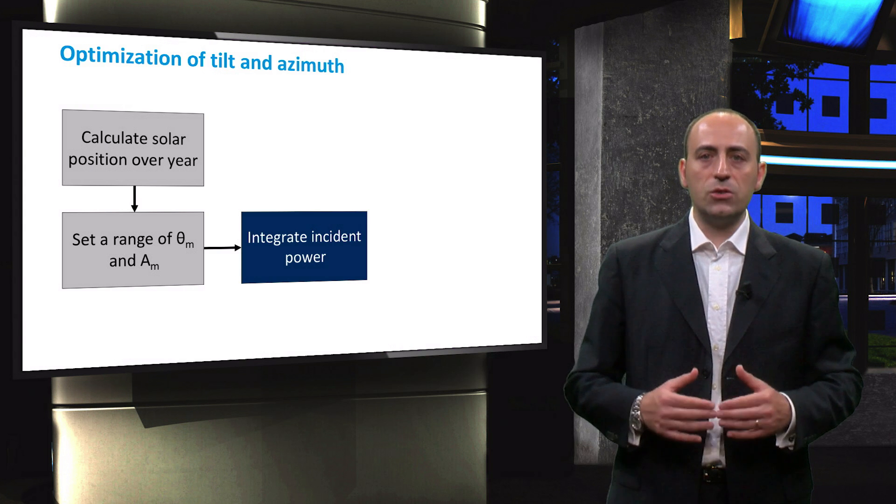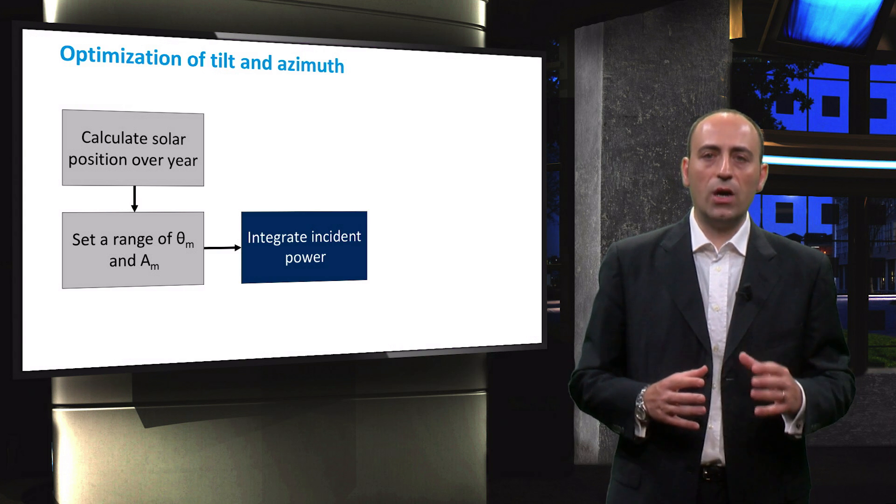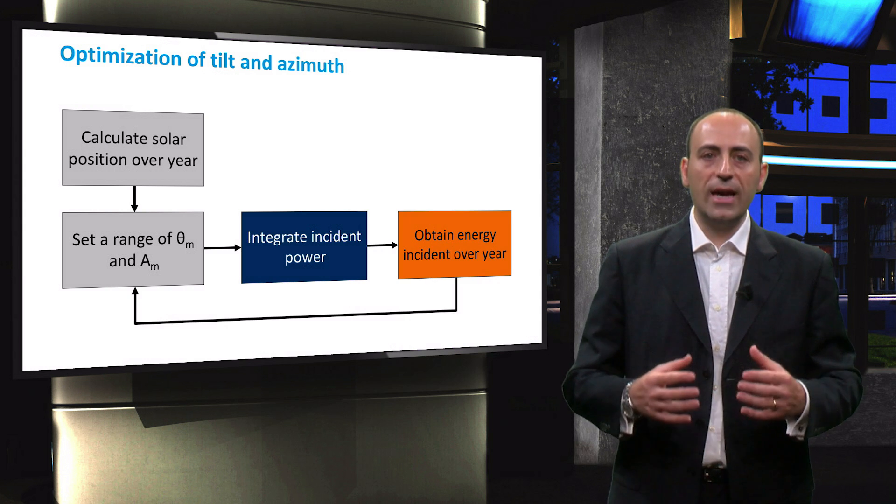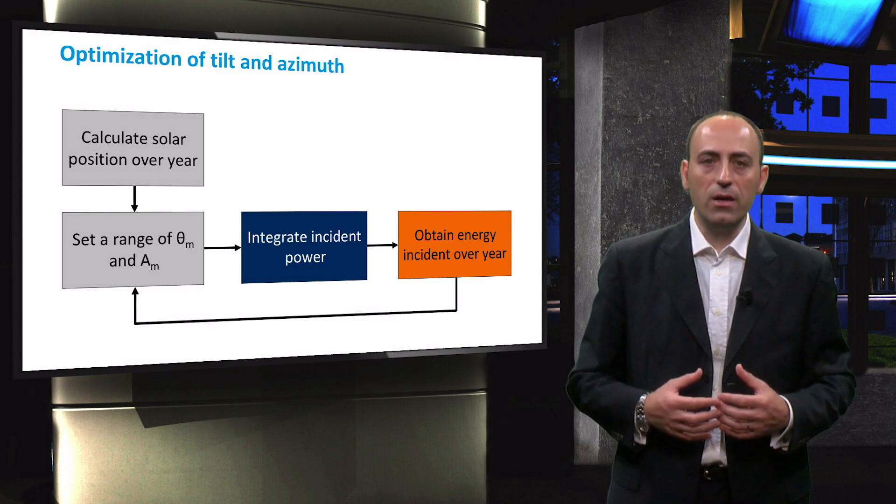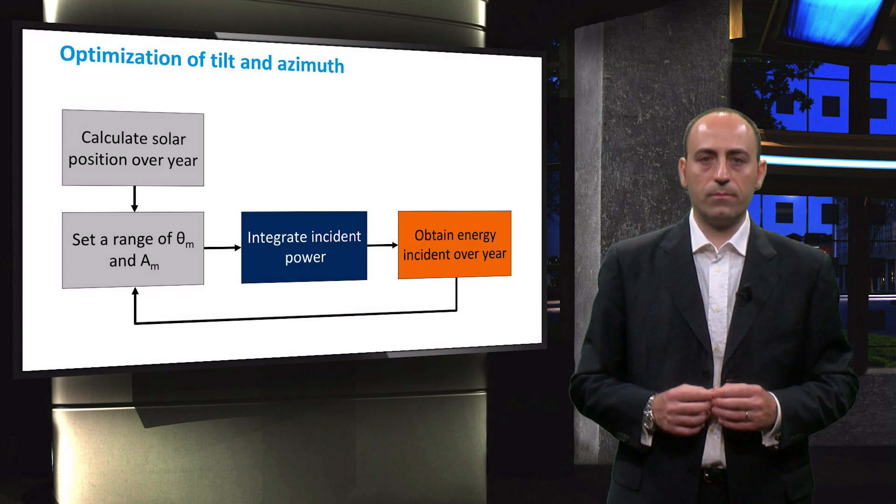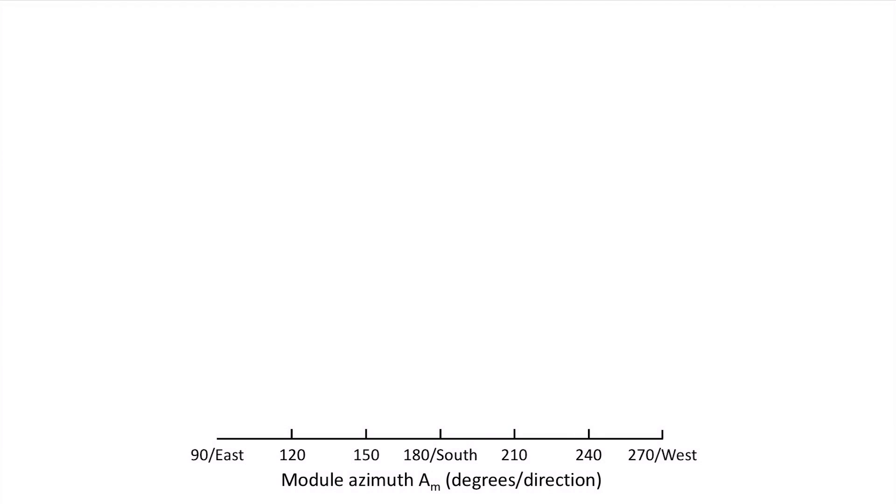The next step is to integrate the incident power over time for the full range of tilt and azimuth angles. This way, we will get the energy incident over a year for a specific combination of tilt and azimuth angles. This provides us with a so-called contour plot.